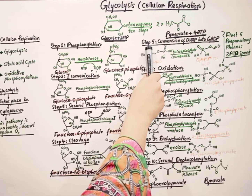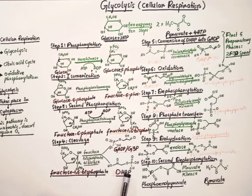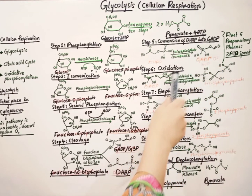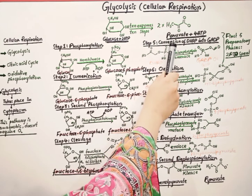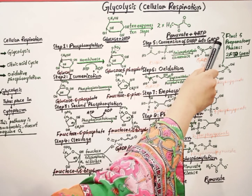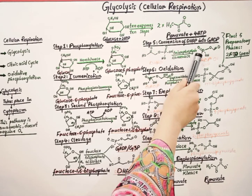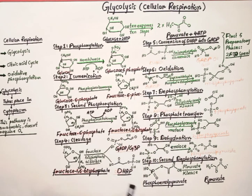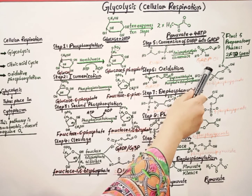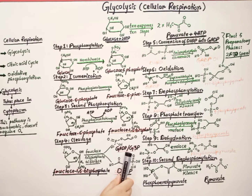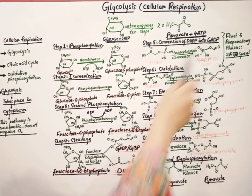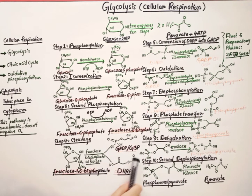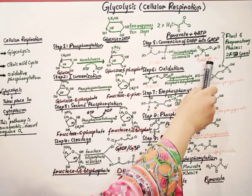In step 5, the conversion of DHAP into G3P (glyceraldehyde-3-phosphate) occurs with the help of triose-phosphate isomerase enzyme. After step 5, we now have two molecules of G3P — one from the cleavage in step 4, and another from the conversion of DHAP in step 5.